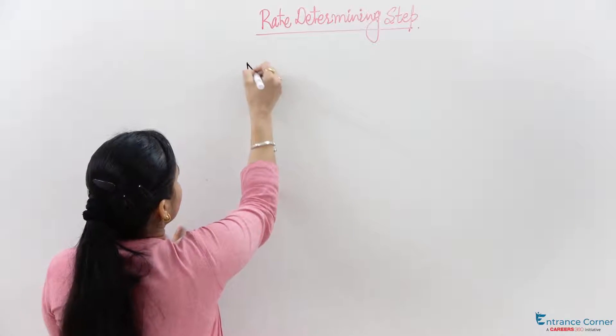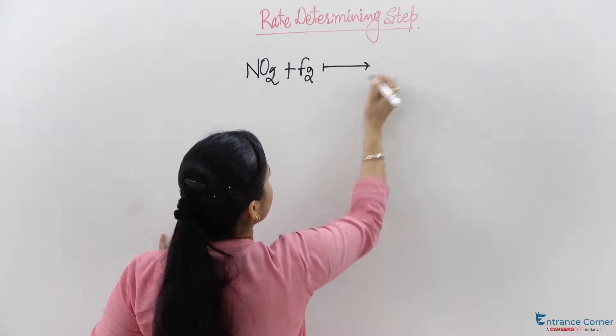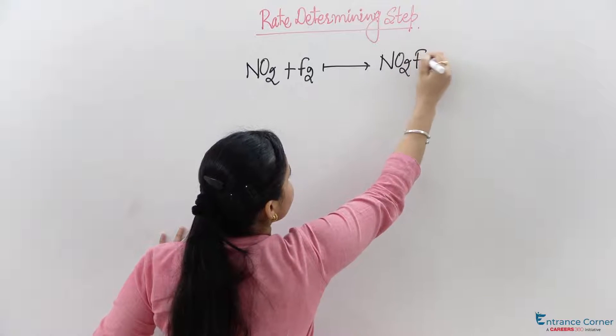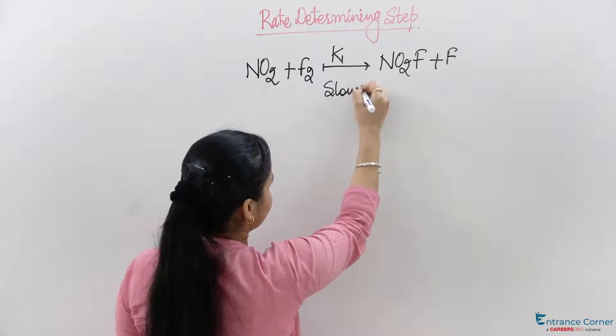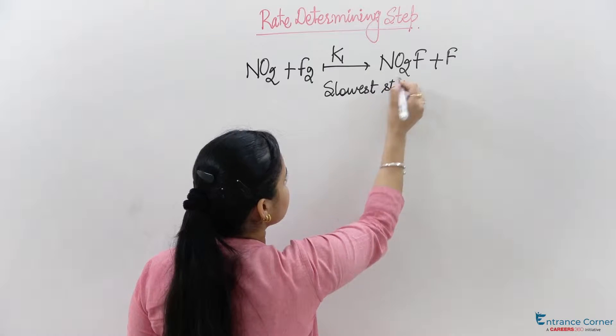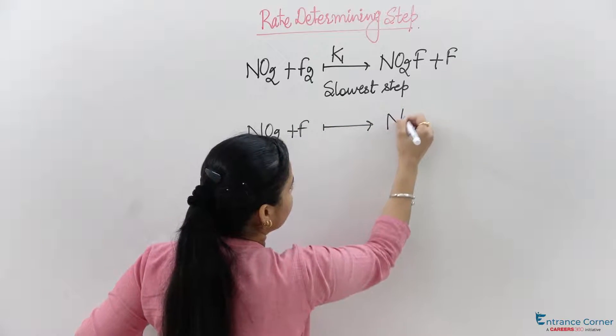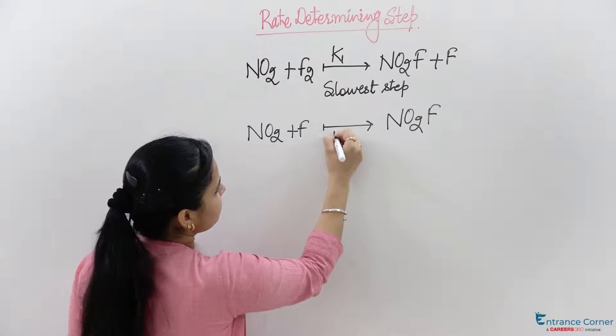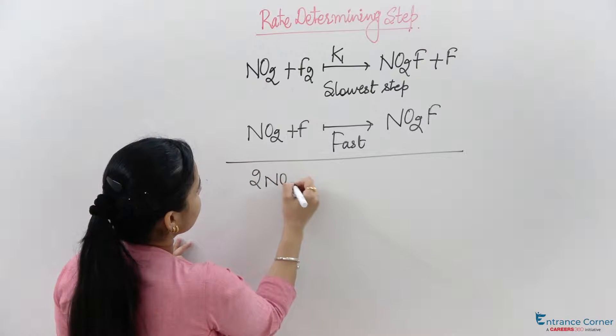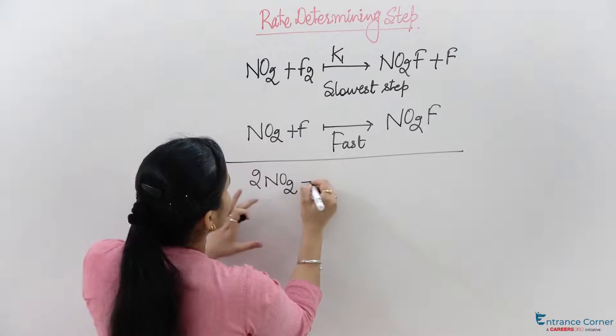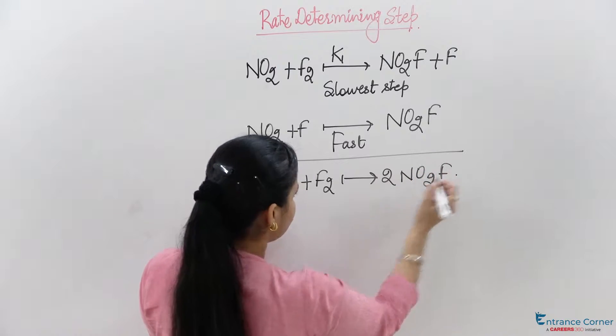Let's take an example. NO2 (nitrogen dioxide) plus chlorine gives NO2F plus F with rate constant K1 - this is the slowest step. NO2 plus F gives NO2F - this is the fast step. Overall, we get 2NO2 plus F2 gives 2NO2F.